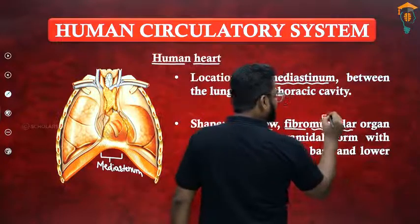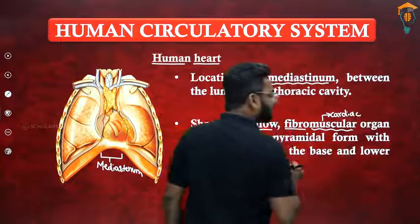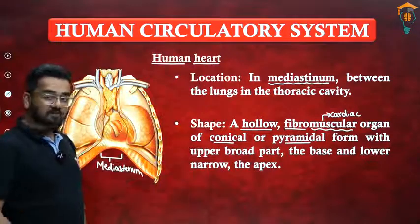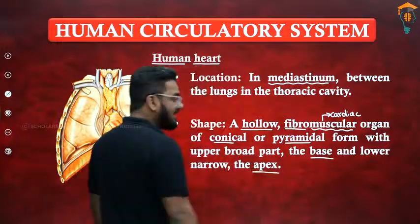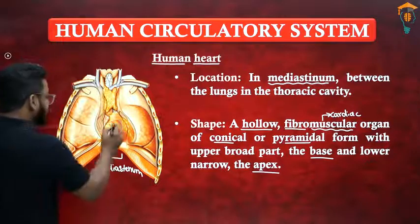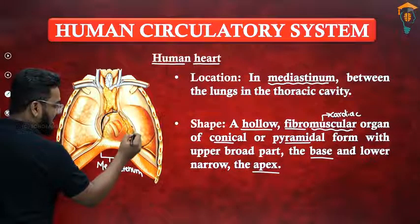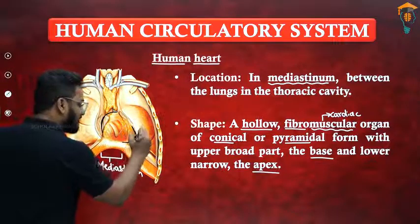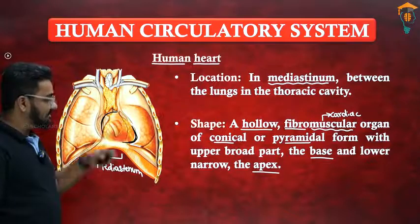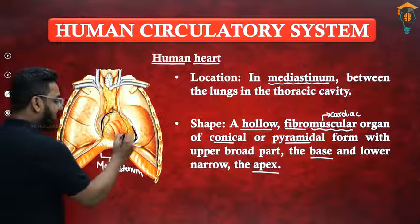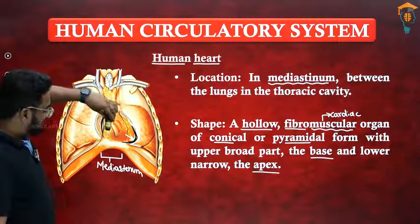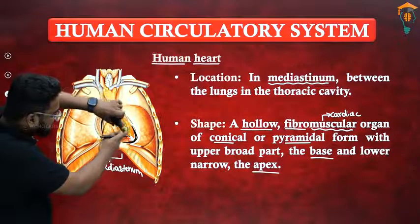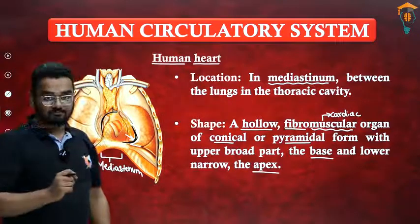It is called fibromuscular because cardiac muscles are present there. The heart is a conical or pyramidal shaped structure. The upper broad part is called the base and the lower narrow part is called the apex. Because of the presence of the apex, a depression is formed on the left lung — that is referred to as the cardiac notch. The apex of the heart is not present straight in the middle; it is tilted towards the left.